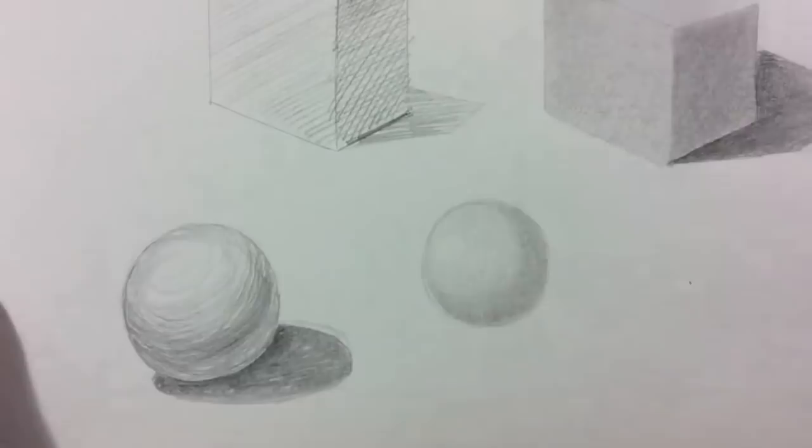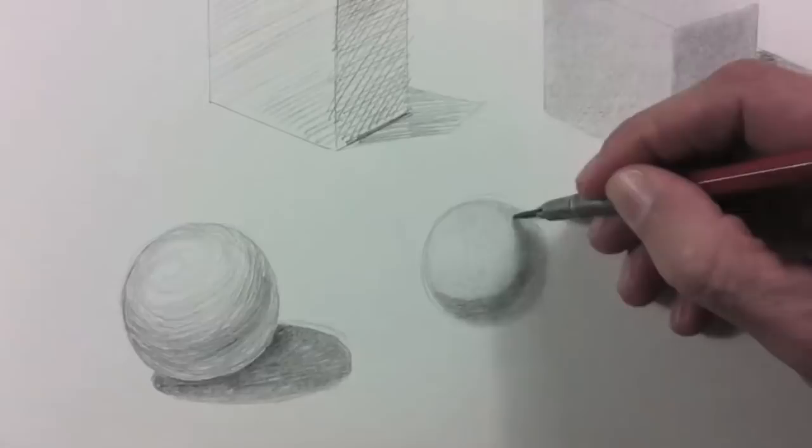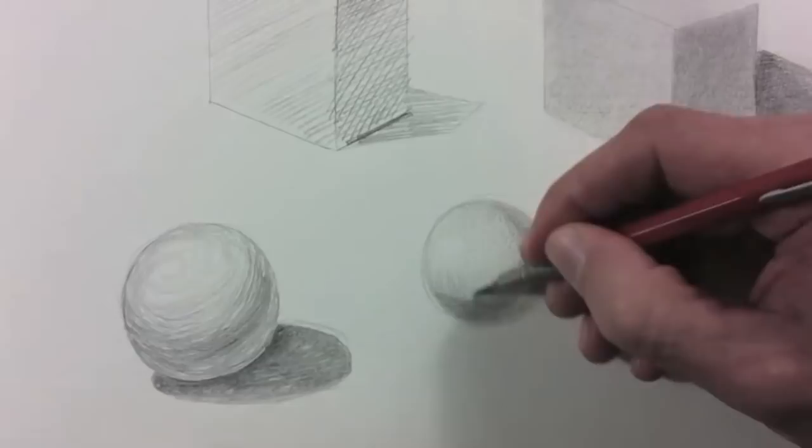But here is the point that is not as intuitive. And that is that the darkest area is just by the light. It is called a core shadow. While the shadow that is further away gets a little bit of reflected light and therefore is not as dark.